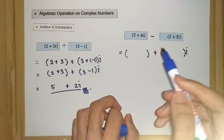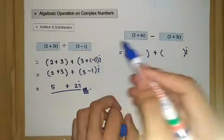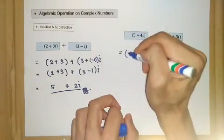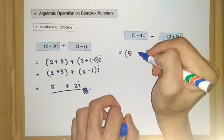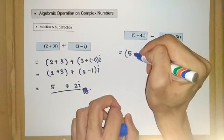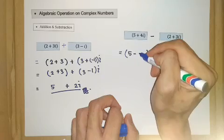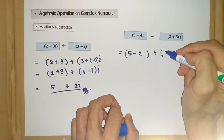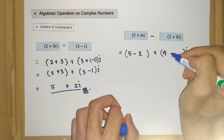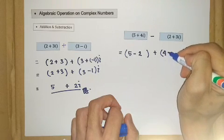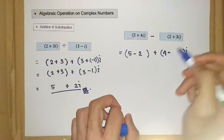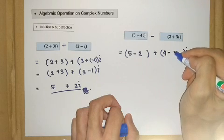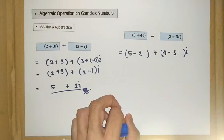Again it's just the same as addition. So we have 5 minus 2, and for this one we have 4 minus positive 3, so 4 minus 3.